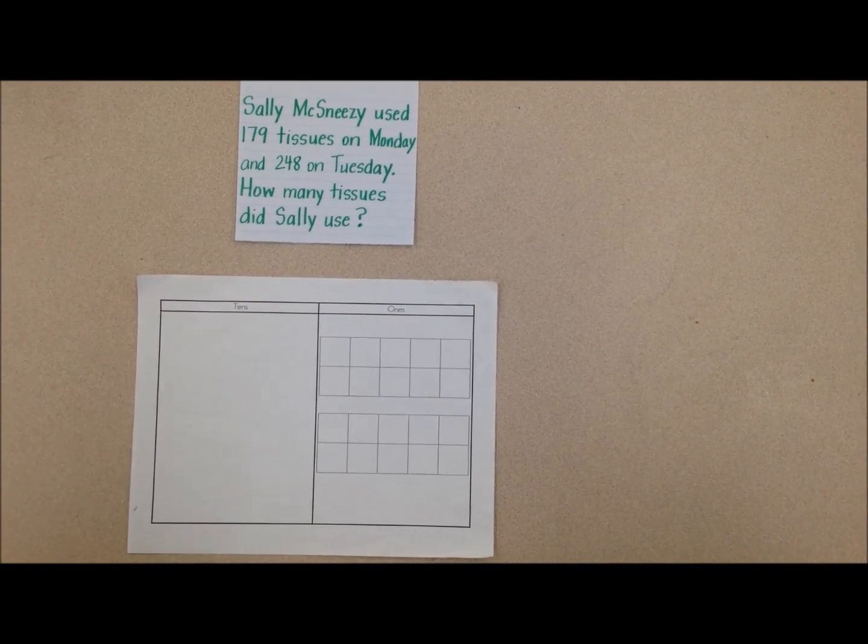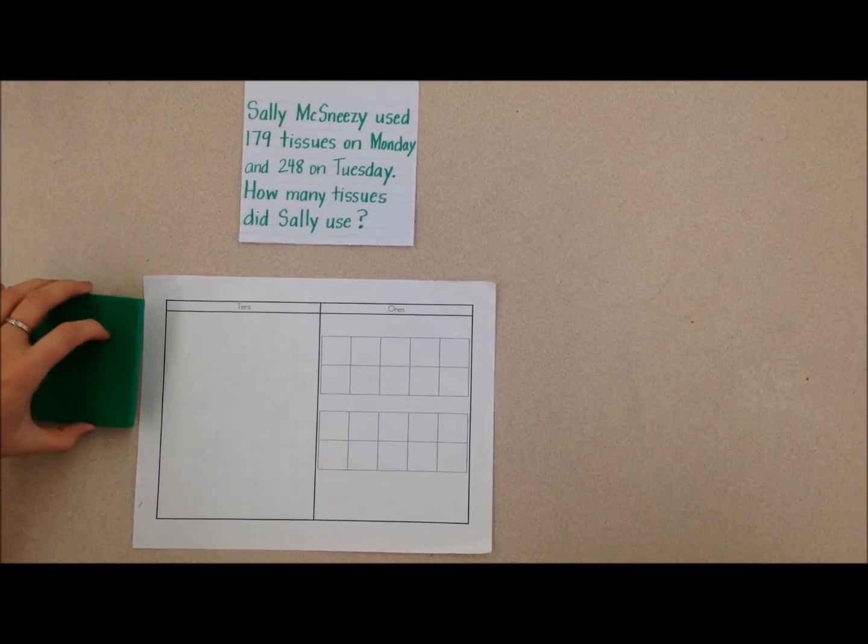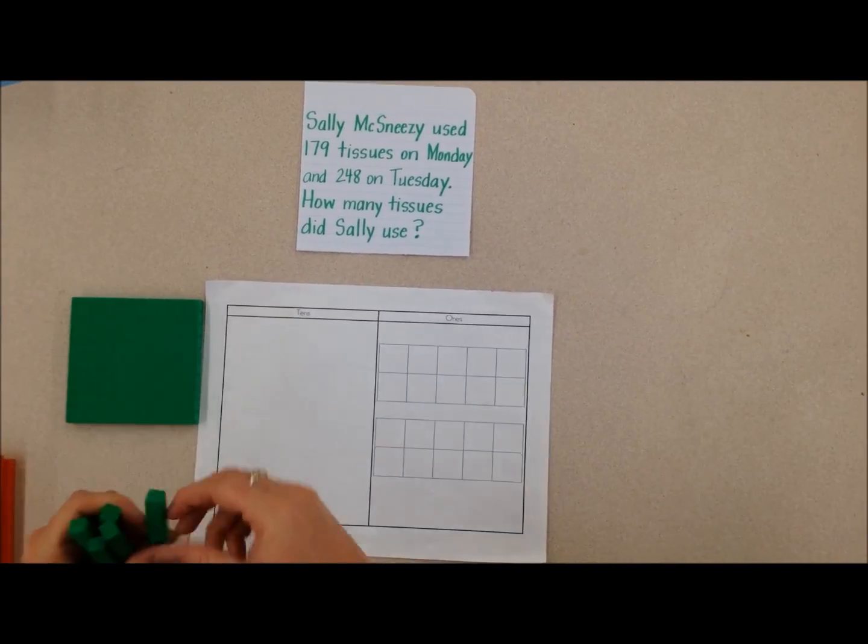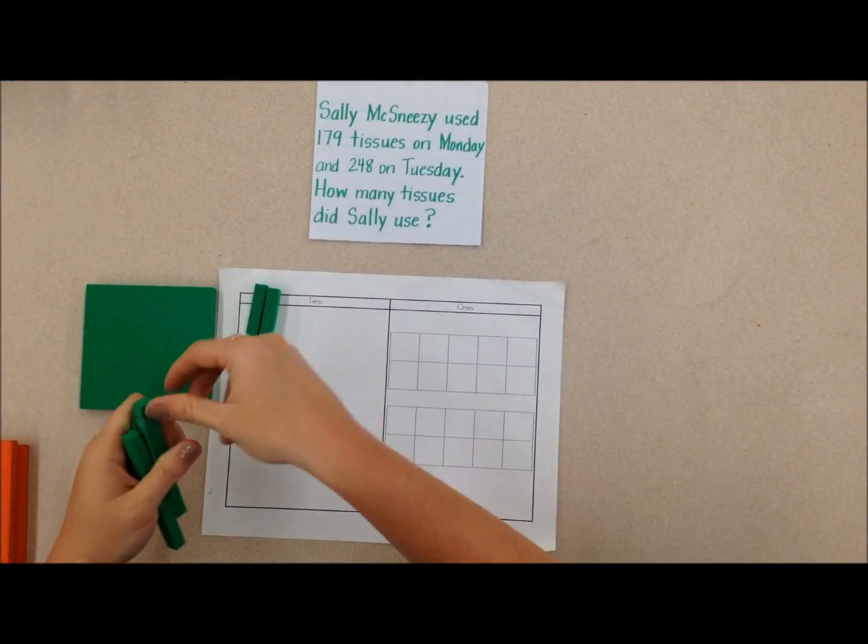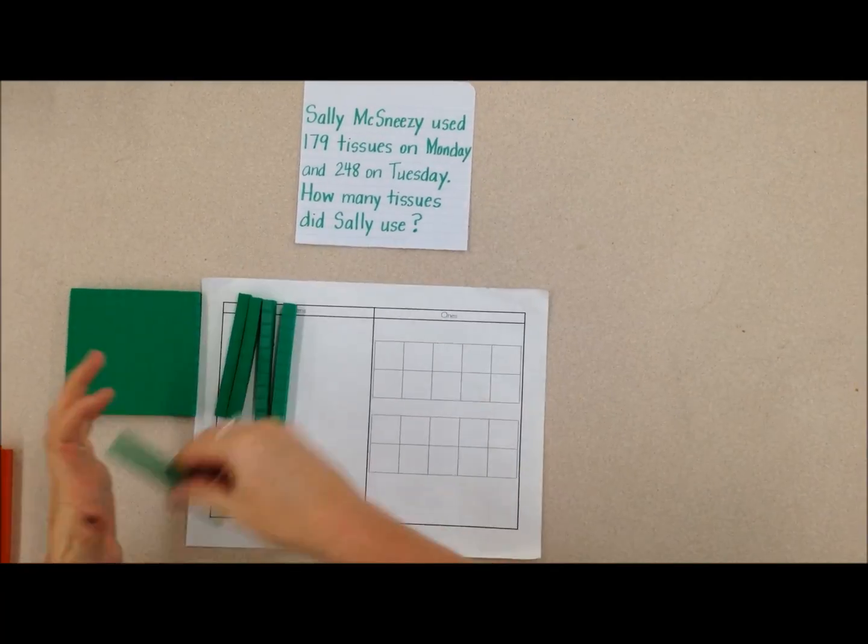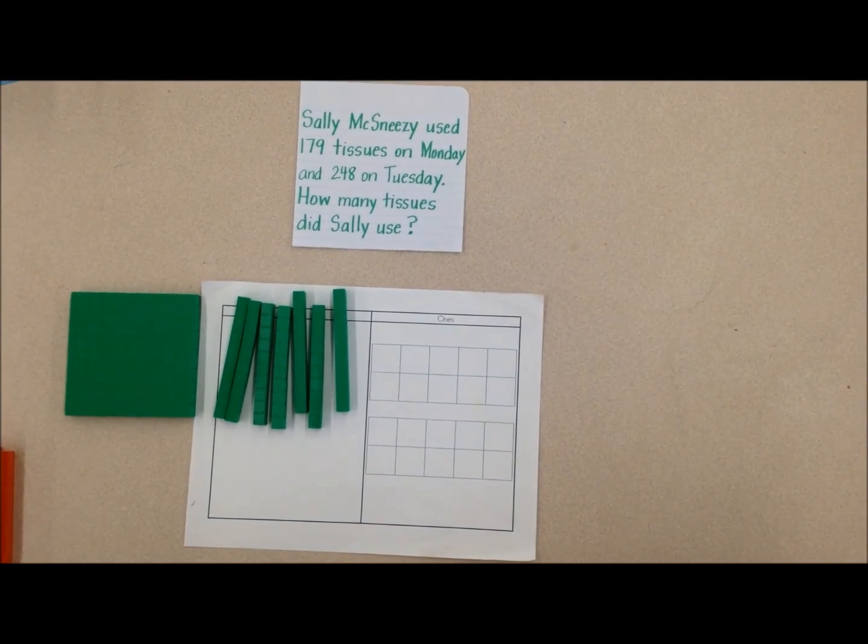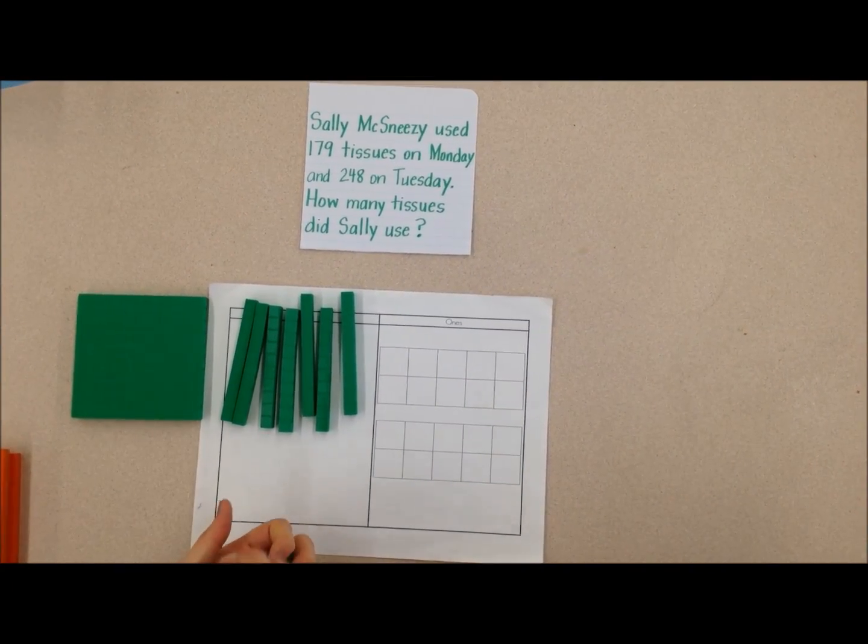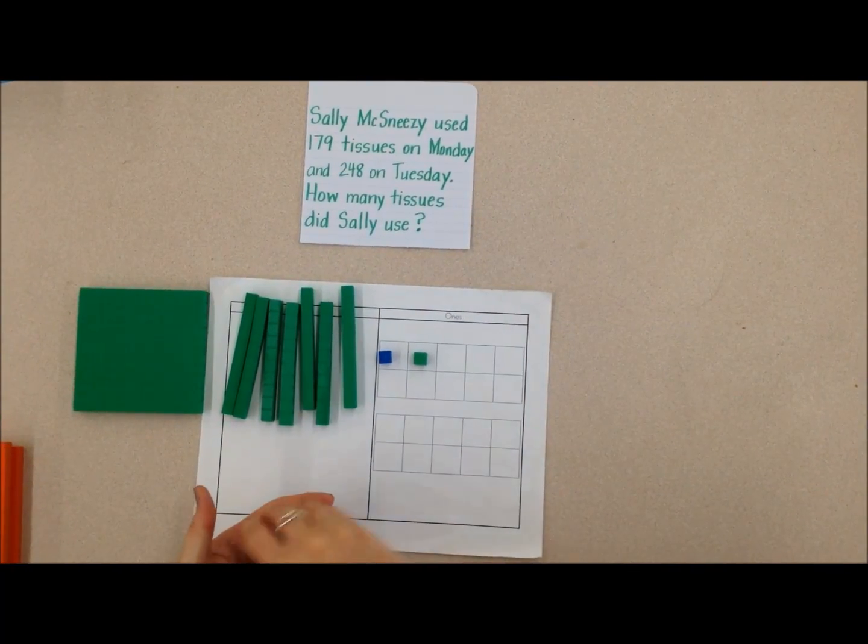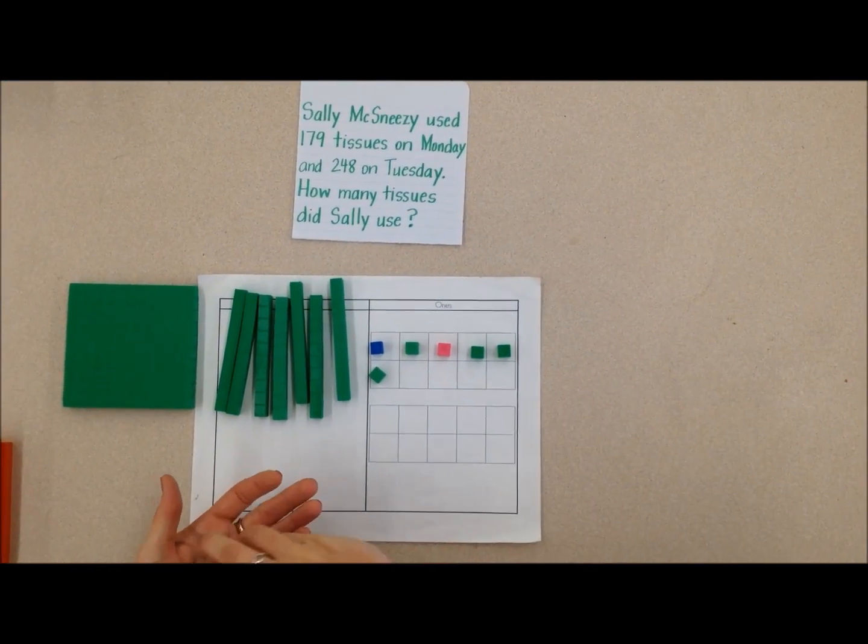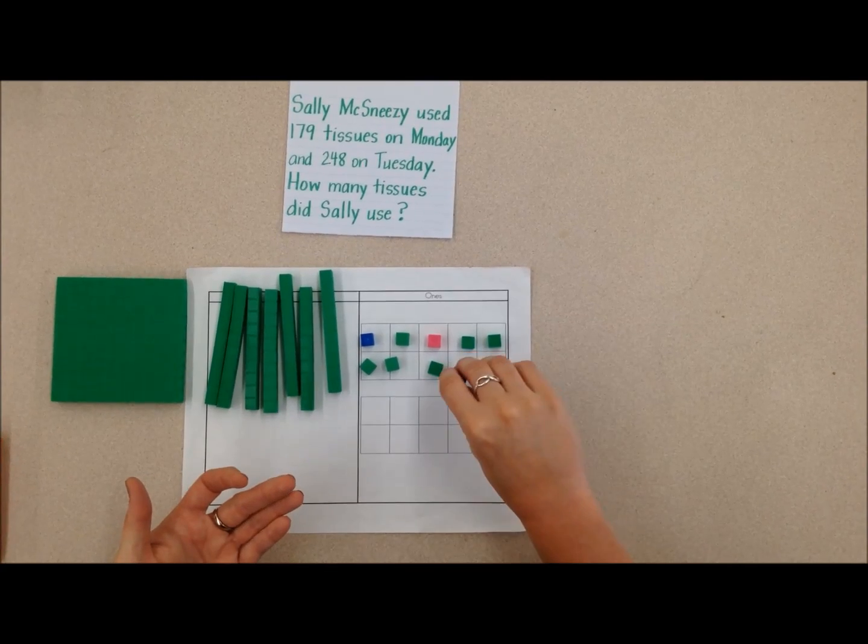So 179 tissues, so that's 100, 7 tens. Let's see, that's 1, 2, 3, 4, 5, 6, 7 tens, and 9 ones. So that's 1, 2, 3, 4, 5, 6, 7, 8, 9.